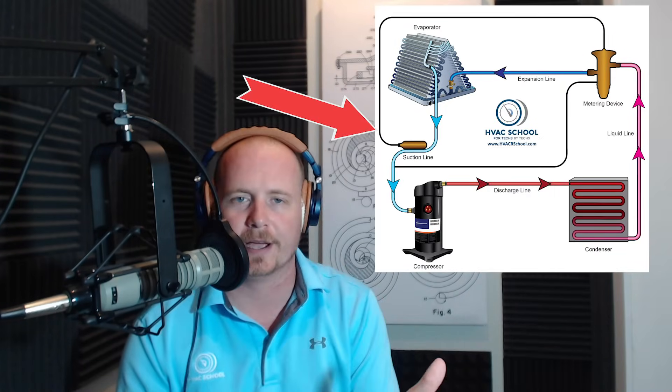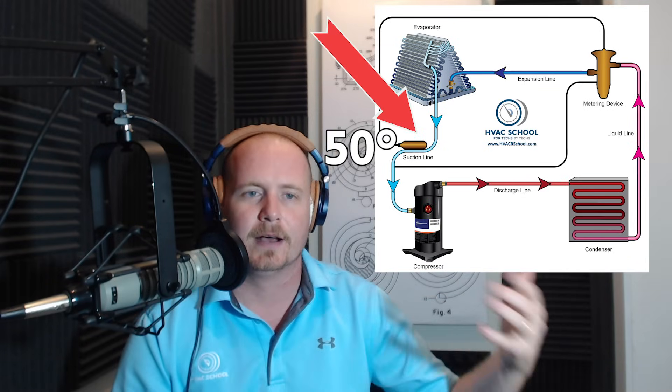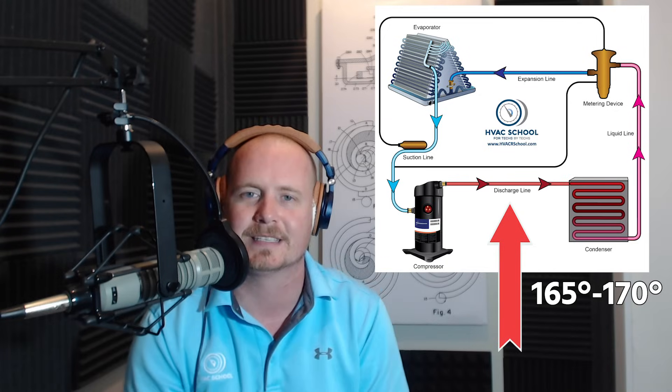The compressor takes vapor from the suction line, pumps it, and sends it out through the discharge line into the condenser. The suction line coming into the compressor is low temperature and the discharge line leaving is high temperature — there's a big difference. On typical air conditioning equipment under normal conditions, you might see around 50°F on the suction line entering the compressor, and then coming out of the discharge line something like 165–170°F.